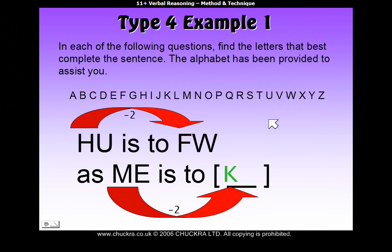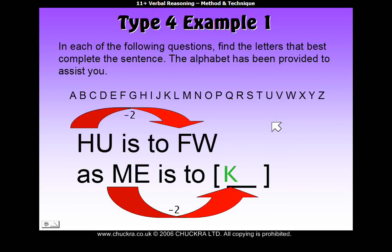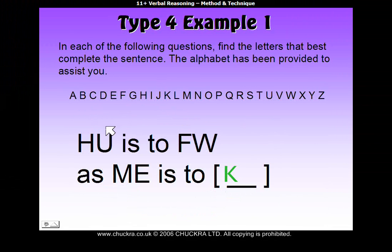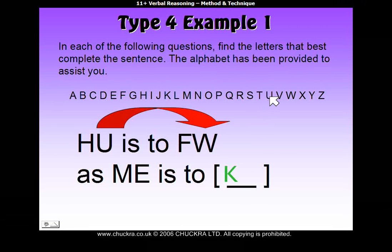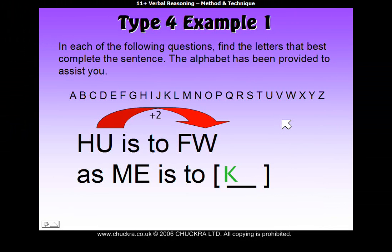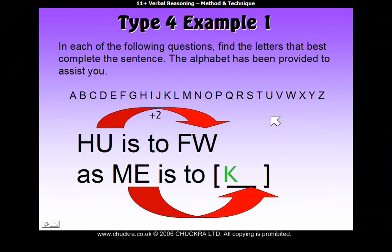Then to find out the second letter of the answer, you do the second letters of each pair and go from U to W. So let's see. U actually goes forward to get to W and it's forward 2. So to find out what E becomes, you have to go forward 2 from E.